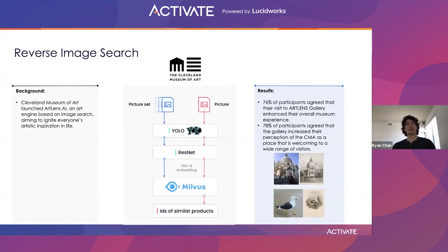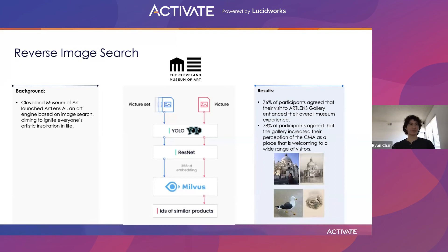Another common use for vector search technology is reverse image searching — that is, searching for similar images given an input image. This is very much the textbook use of vector searching; if you see an example of vector searching, this is probably the one you'll see. We found that reverse image product search is used a lot by many different companies, often using Milvus. In this case, two neural nets are used to pull out an embedding: first, a tuned YOLO net for object detection, and next a ResNet for image embedding. With these image embeddings in Milvus, a similarity search can be performed to find the closest matches.